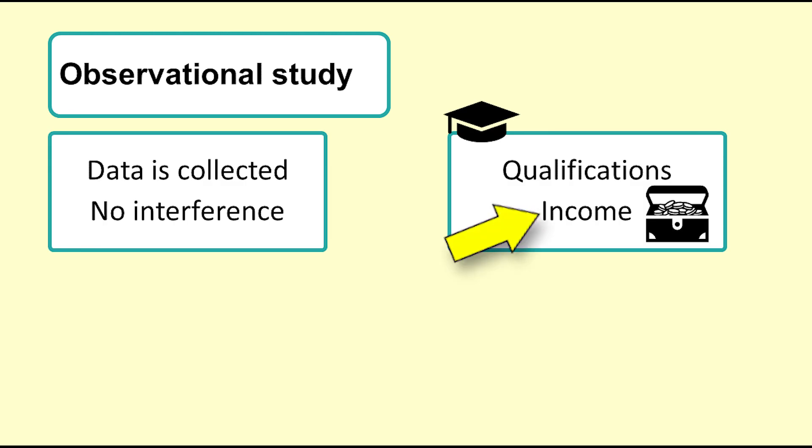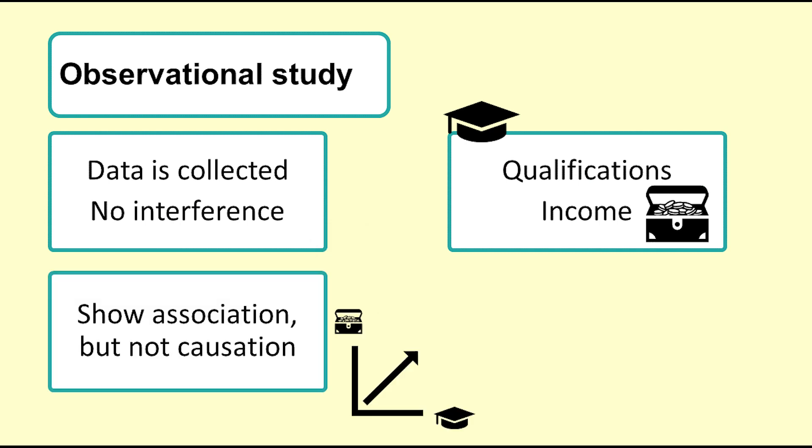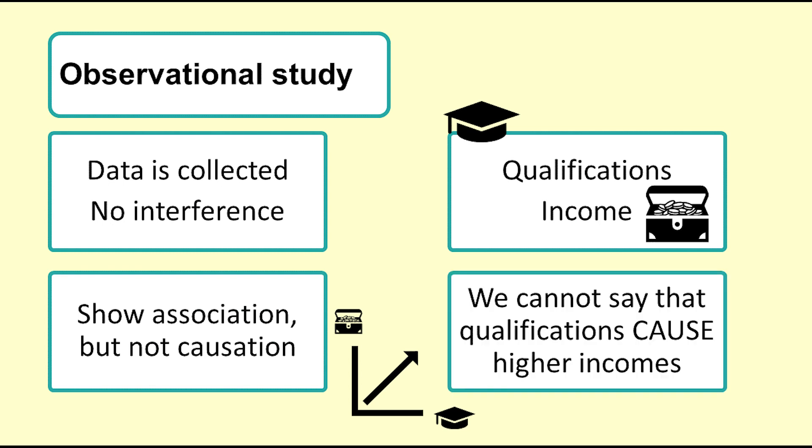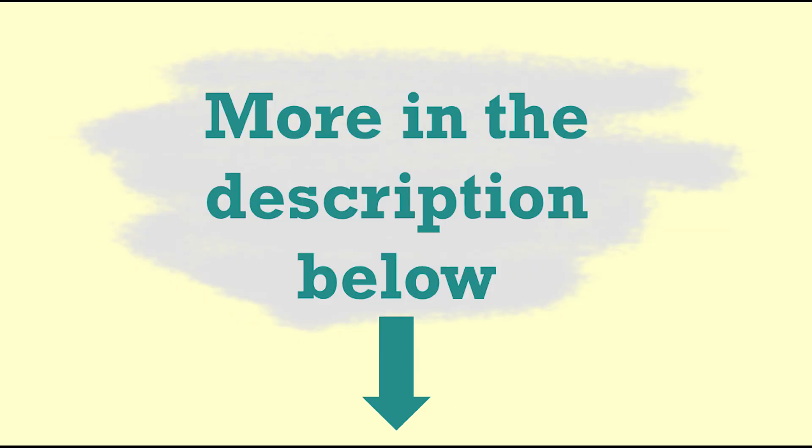An example of an observational study is looking at the annual income of a sample of people who have different qualifications and seeing if there is a relationship between the level of qualification and their income. We have not altered any aspect of the process or randomly assigned people to different levels of qualifications. If we find that people with higher qualifications earn more money, we cannot assume that the extra income is because of the qualification.